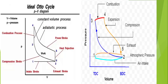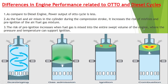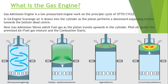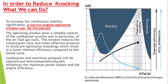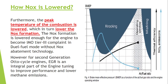The gas admission engine follows the Otto cycle — with the compression stroke, combustion process, power stroke, and heat rejection/expansion stroke. The diesel cycle operates at constant pressure, while the Otto cycle operates at constant volume. I hope you now understand how the gas admission engine works, why knocking occurs, how knocking is avoided, and how NOx is lowered. If you still have doubts, please comment below. Please subscribe and share. Have a good day!